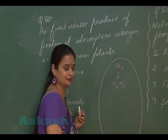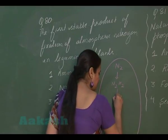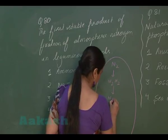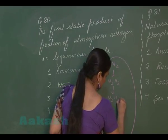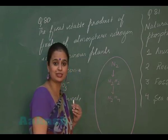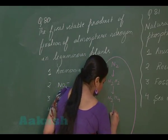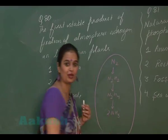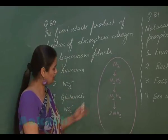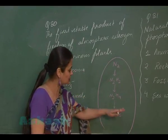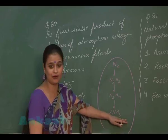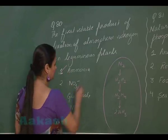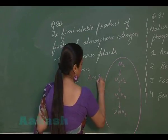Diamine further undergoes reduction to form hydrazine. Hydrazine further undergoes reduction and results in the formation of two molecules of ammonia. So through nitrogen fixation, the first stable product formed is ammonia, meaning for question number 80 the right answer is option 1.